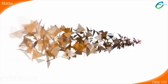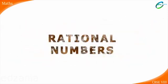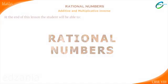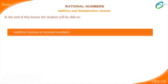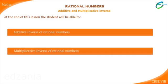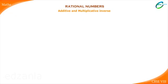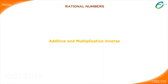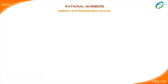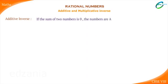Rational numbers. Additive and multiplicative inverse of rational numbers. Additive inverse: if the sum of two numbers is zero, the numbers are additive inverse of each other.